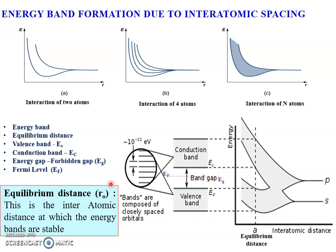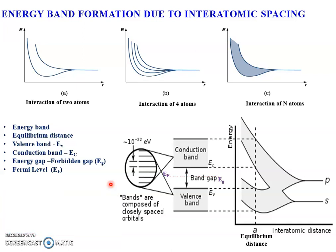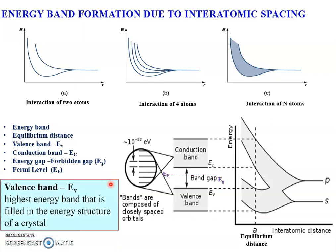Below R₀ or above R₀, the energy bands are unstable. Next, the valence band: this is the highest energy band that is filled in the energy structure of a crystal or material. That means this is the outermost energy level — the highest energy that electrons of that atom can occupy — and it is called the valence band.